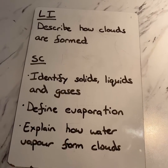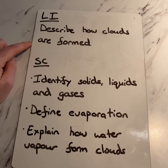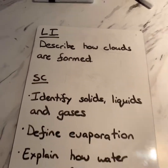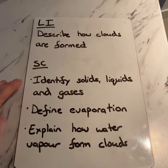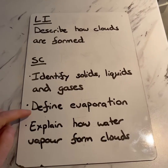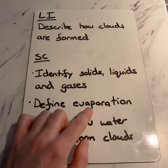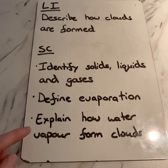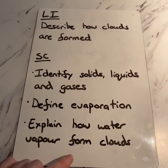So in this video lesson, our learning intention is to describe how clouds are formed — formed means made. To do this, we're going to need to identify solids, liquids and gases. We're going to define something called evaporation — that means find the meaning of evaporation. And we're going to explain how water vapour forms clouds.